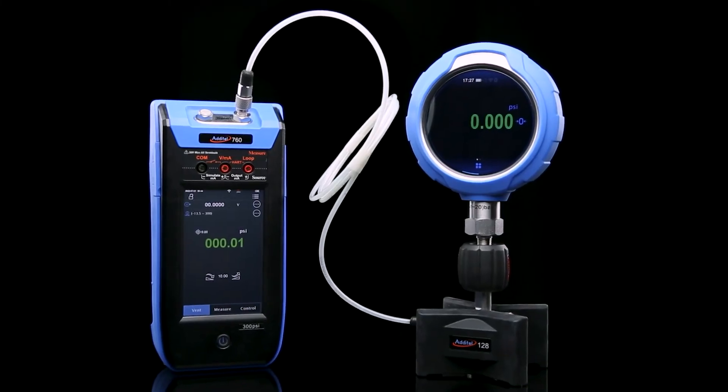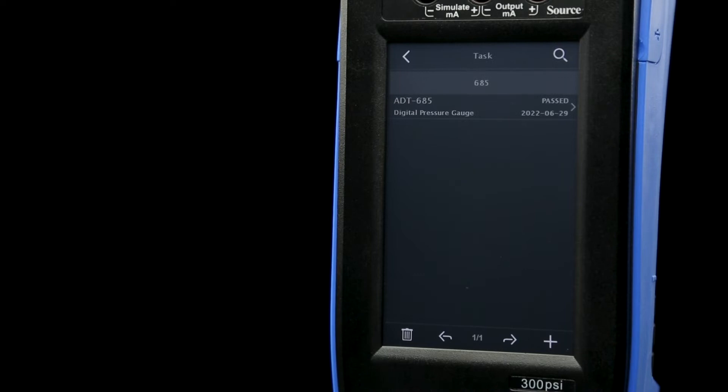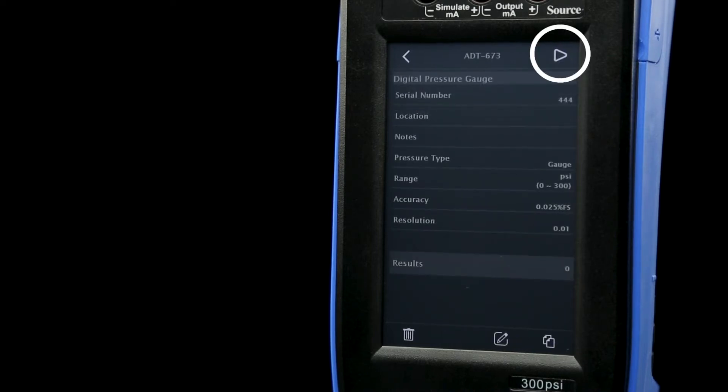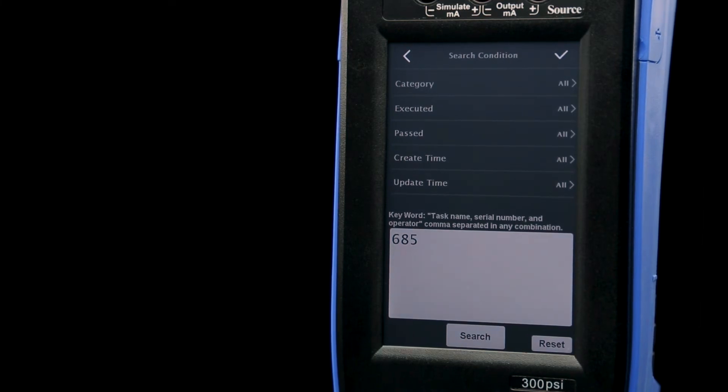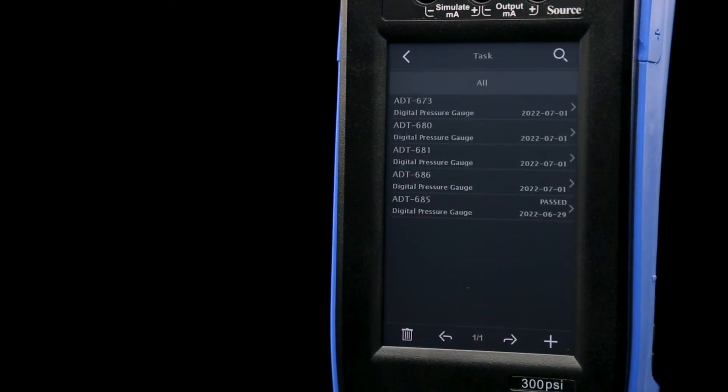When it comes to pressure calibration, test procedures can be saved and automated for your specific devices to be run at the press of a button. These procedures can also be recalled later from the task library, ensuring that you never have to set up the same test twice.